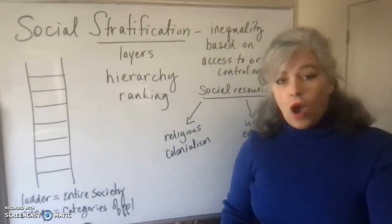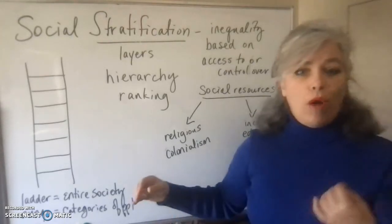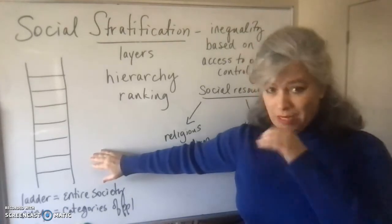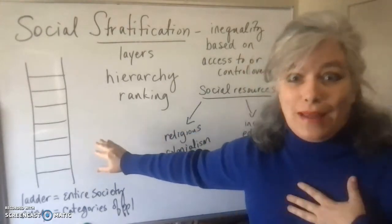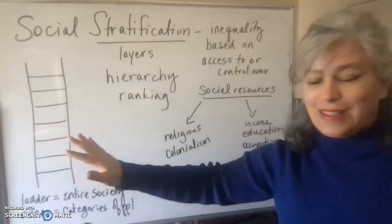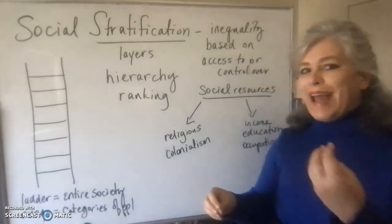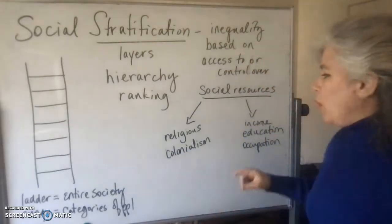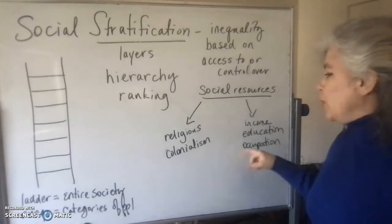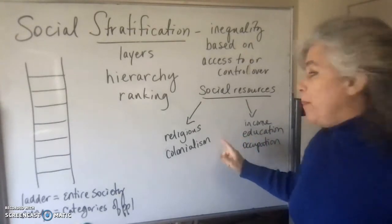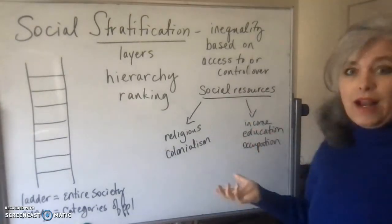In the United States, we have an open system of social stratification. Open means that social mobility is possible. Other sociologists use this ladder as a metaphor for society because in the USA we are taught — through our socialization process — that we are free to improve our income level by getting an education and pursuing a particular occupation that will give us that income level.